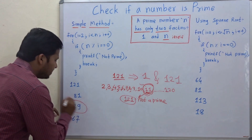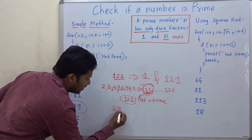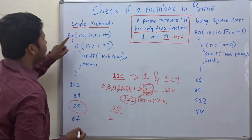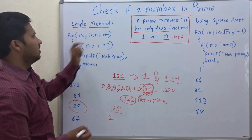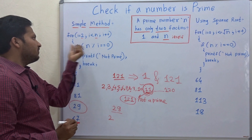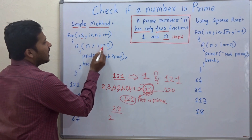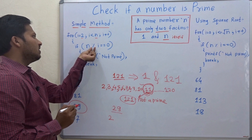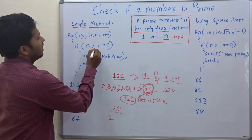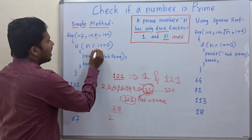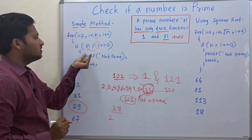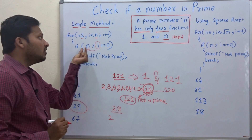Now let's check 29. For i equal to 2 to n, inside this for loop the condition is: if n mod i equals 0, that means the remainder is 0, which means i divides n. If the remainder is not 0, then i does not divide n.